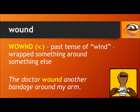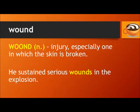And finally, we have 'wound' and 'wound.' 'Wound' is the past tense of 'wind,' meaning wrapped something around something else. For example: the doctor wound another bandage around my arm. 'Wound' means an injury, especially one in which the skin is broken. For example: he sustained serious wounds in the explosion.